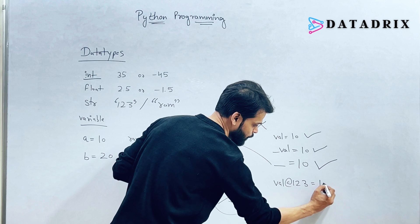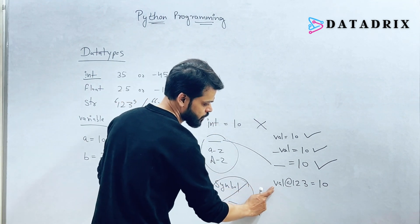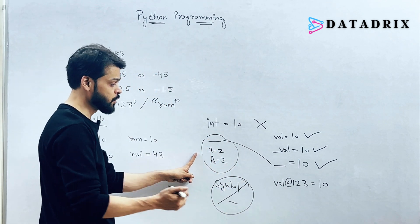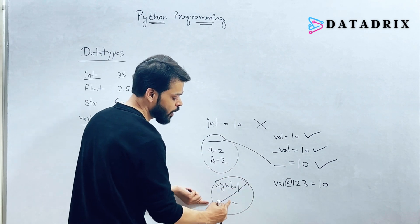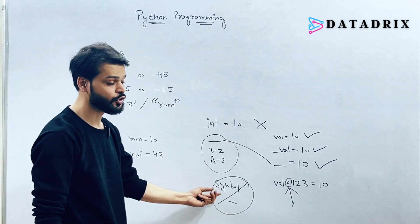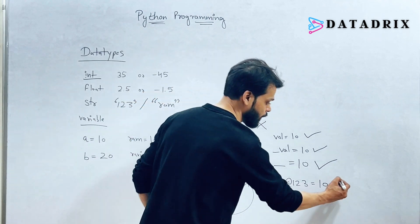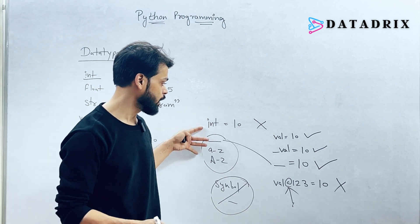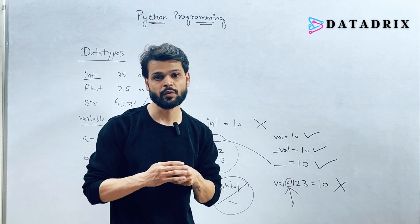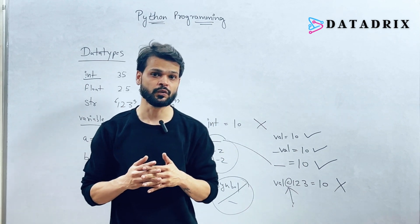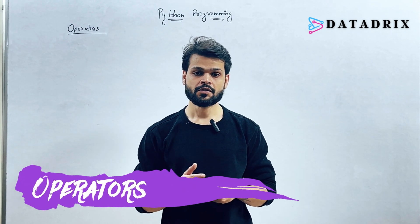For 'val_123 = 10': it is not a keyword, it starts with a letter — satisfying the second condition — but it contains the '@' symbol, which is not allowed. So this is incorrect. To summarize: a variable should not be a keyword, should start with an underscore or letters, and should not contain any symbol except the underscore.